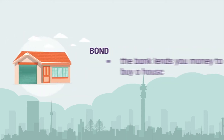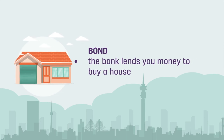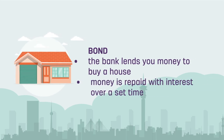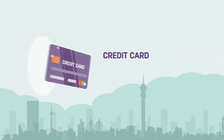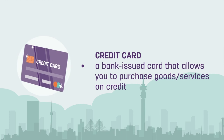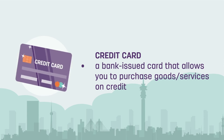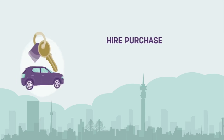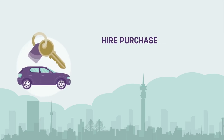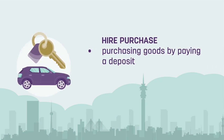Secondly, there's the bond. That's when the bank lends you money to buy a house; this is paid with interest over a set time frame. Another type of lending is the credit card, issued by a bank to allow you to purchase goods or services on credit.